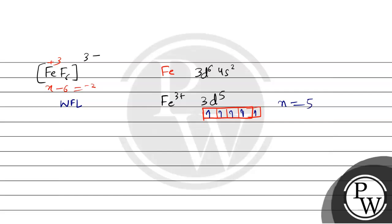Next complex, we have [V(H2O)6]2+. So vanadium, atomic number we have is 23. This is configuration 3d3 4s2. Vanadium 2+ is 3d3.